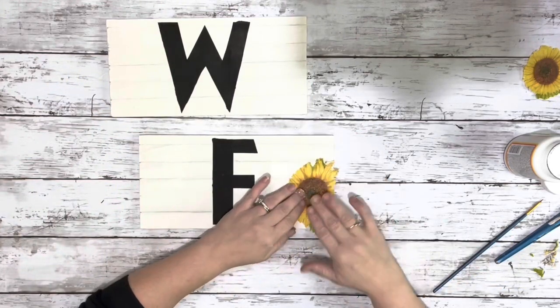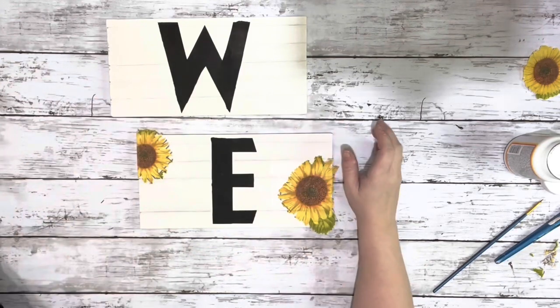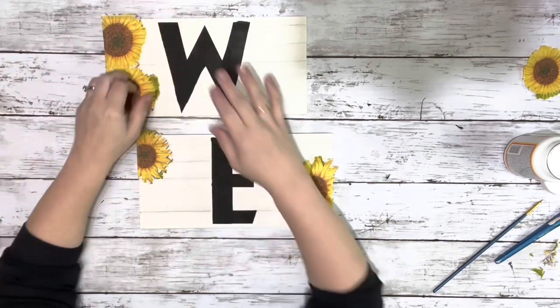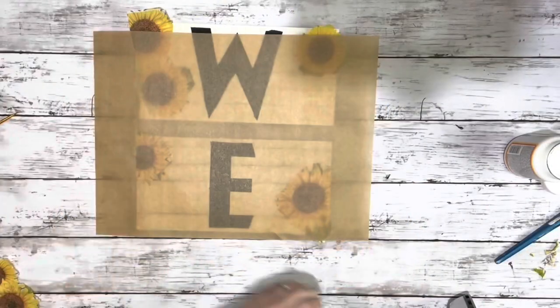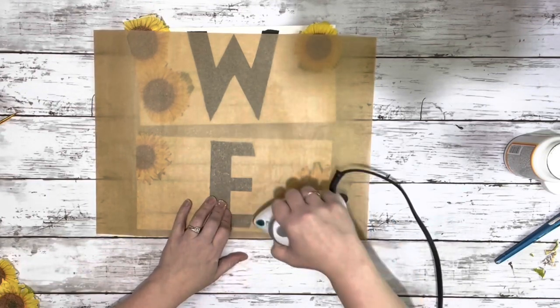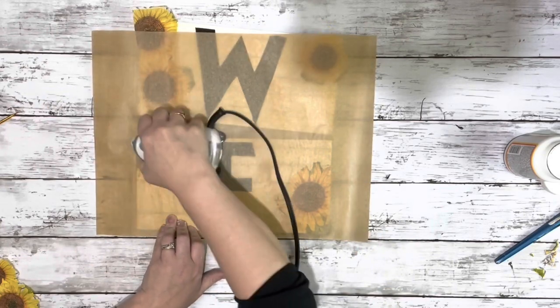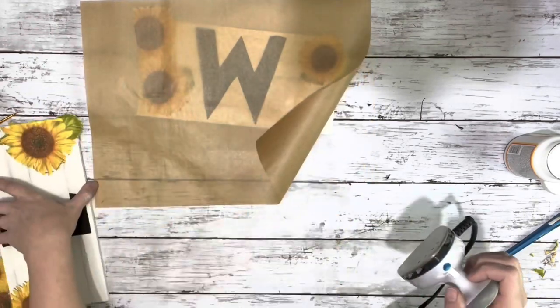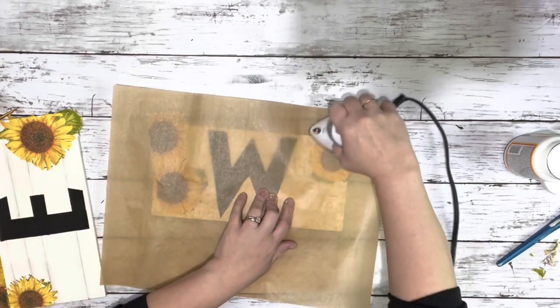And then after the Mod Podge was dry, I placed the sunflower napkins over that Mod Podge. And then I placed parchment paper down over them and ironed each of those little sunflowers. So, it reactivates the Mod Podge and seals those napkins down. And I did this to each of my seven pieces.